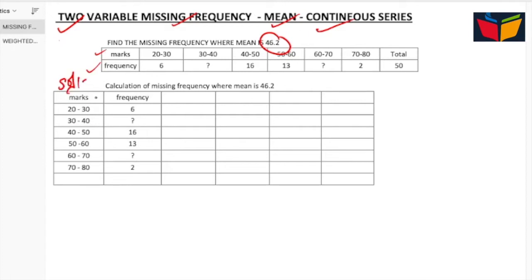Marks and frequency. Whenever there is a continuous series, our first step should be to calculate mid values. To calculate mid values we need to add upper value plus lower value divided by 2. 20 plus 30 divided by 2 is 25, 30 plus 40 divided by 2 is 35. Likewise, calculate the rest, or else you can see the difference. There is a difference of 10, so with the difference of 10, write down the rest.